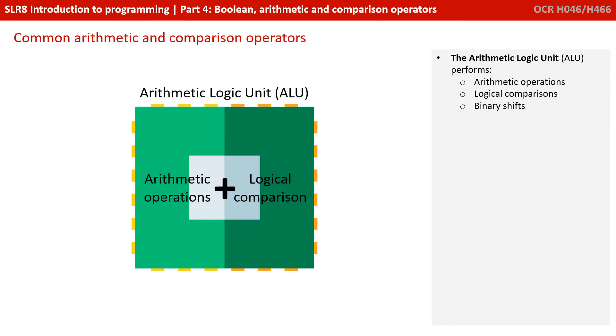So before we dive in, let's think about what the Arithmetic Logic Unit performs. It performs arithmetic operations, logical comparisons, and binary shifts. Because of this, there's a number of things you expect it to be able to do. You expect to be able to perform addition and subtraction, and compare if one item is greater than or less than the other. These types of actions performed by the ALU are supported by operators you can use in all common programming languages. Let's take a look at some of them now.